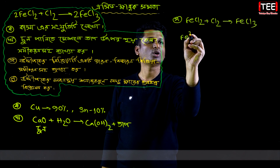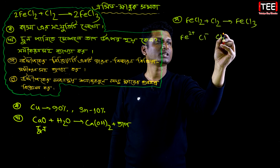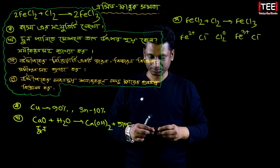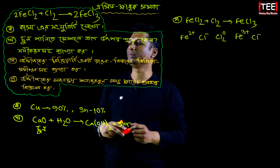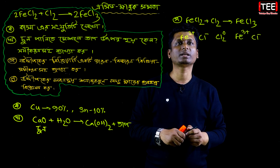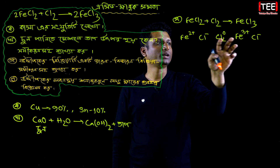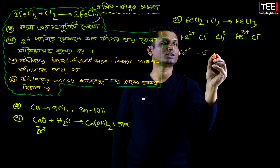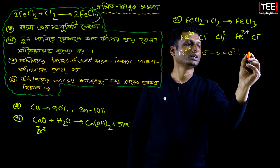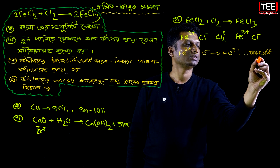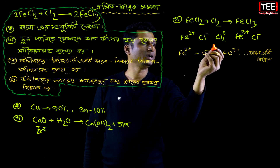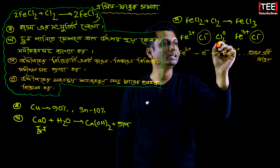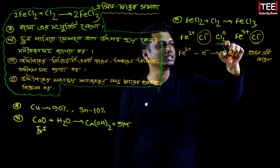Ferric chloride is Fe2+ and Cl minus. This is the main factor of chlorine, that's why it means 0. FeCl3 — meaning ferric chloride is FeCl3 — and chlorine minus. Here, if we are related to this, then raise it with F. So the term that adds to it also.